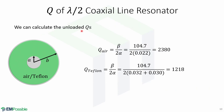Now we are ready to calculate the unloaded Q values for air and Teflon. The Q for air equals beta over 2*alpha, which is equal to 2380. The Q factor for Teflon equals beta over 2*alpha, including both the attenuation due to dielectric loss and conductor loss, and it equals 1218. Notice that the Q factor for air is almost twice as large as the Q factor for Teflon.